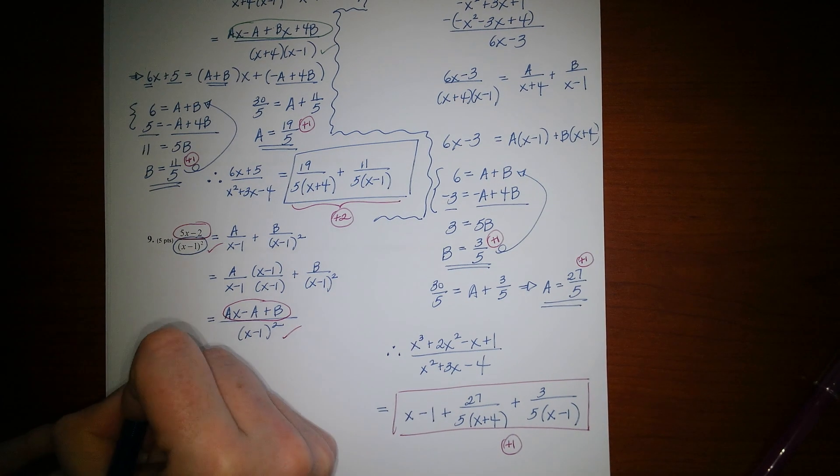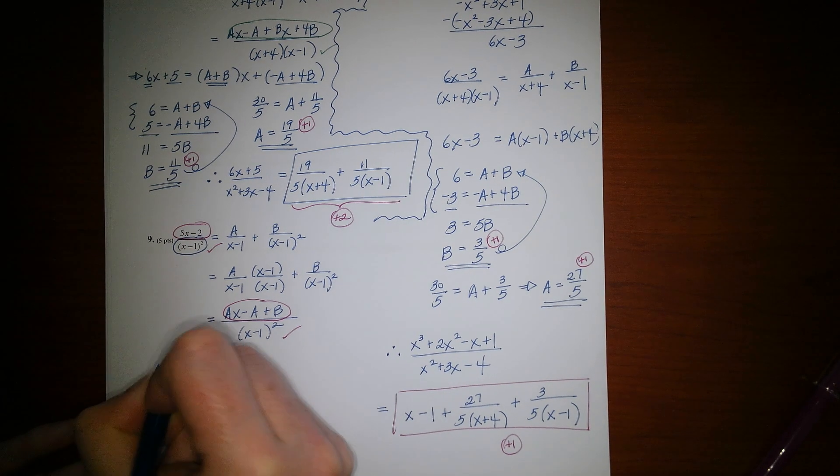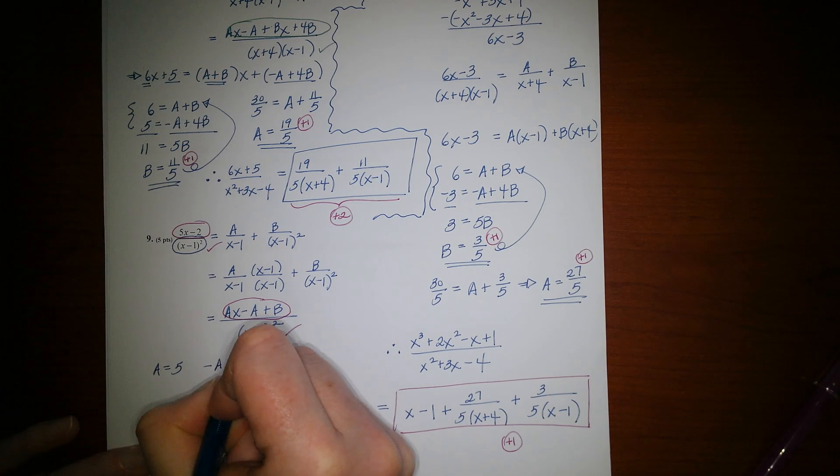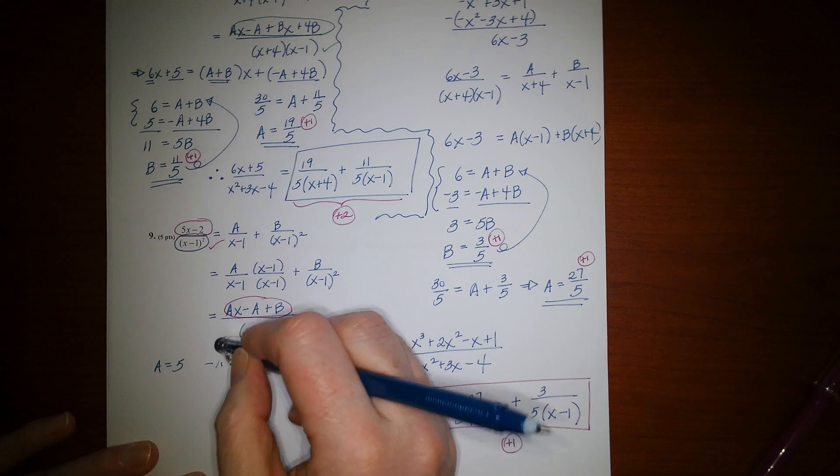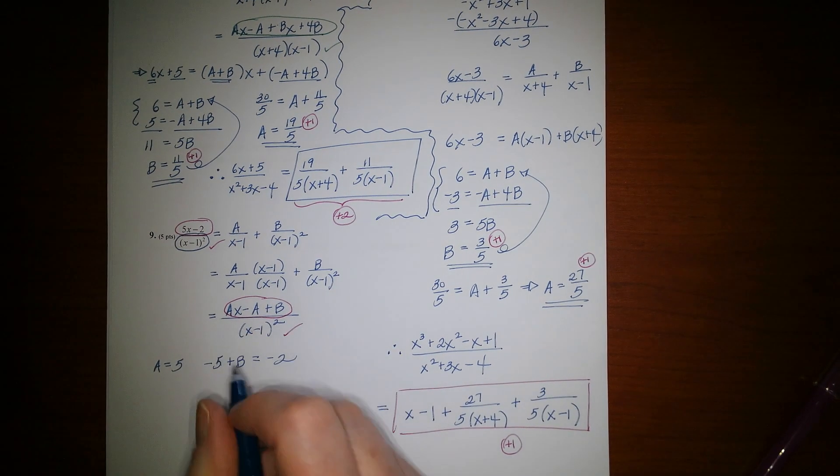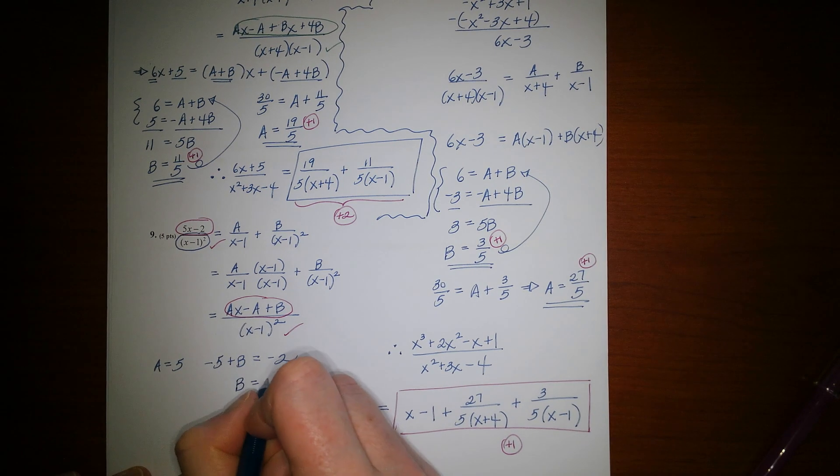So what do we know? We know a must be 5, first of all. And then we also know that negative a plus b must equal negative 2. And since a is 5, you could just add the 5 over. So you'd have b is 3.